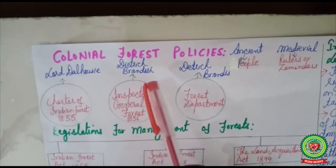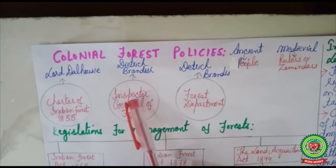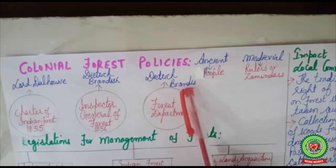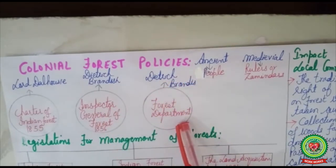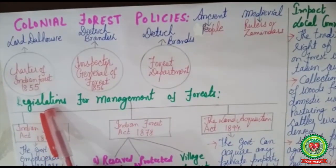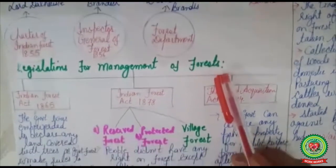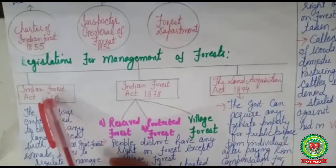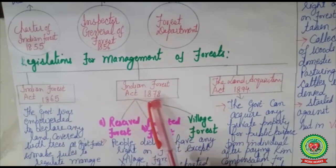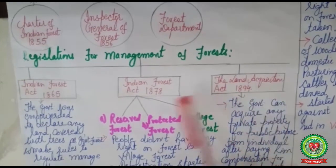In 1856, Dalhousie made Mr. Dietrich Brandis, a German botanist, the Inspector General of Forests. Dietrich Brandis then set up the first ever forest department in India. The British government then thought that laws had to be made to manage the forests in India, so three different laws were made: the Indian Forest Act of 1865, the Indian Forest Act of 1878, and the Land Acquisition Act of 1894.